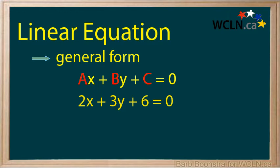a or b can be zero, but not both at the same time. The general form is not always the most useful form when you are doing calculations.